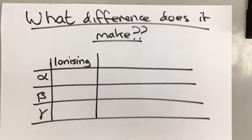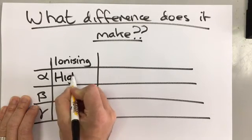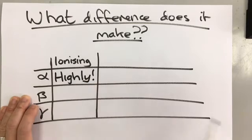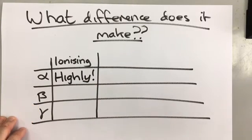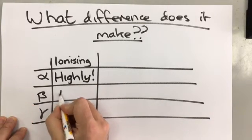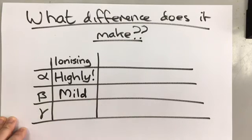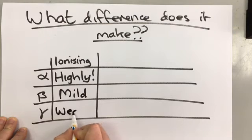Different particles are ionizing in different ways. The most ionizing particle is the alpha particle. The second most ionizing is the beta particle. And the third, the least ionizing, is the gamma.